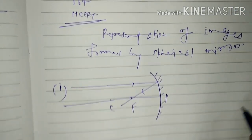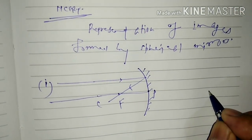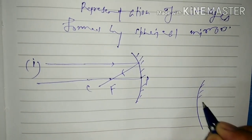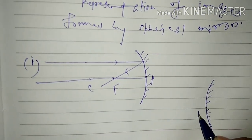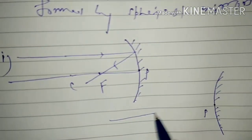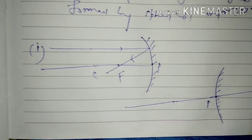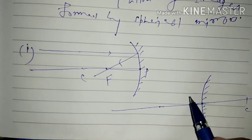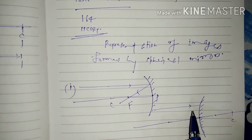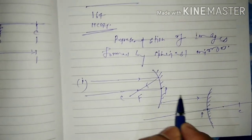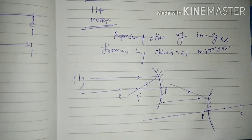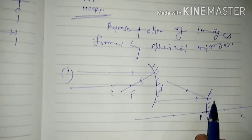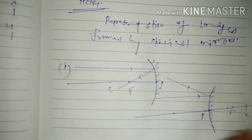For a convex mirror, rays of light parallel to the principal axis, after reflection, diverge in such a way that when proceeded back they appear to come out from a point, and this point is the principal focus.